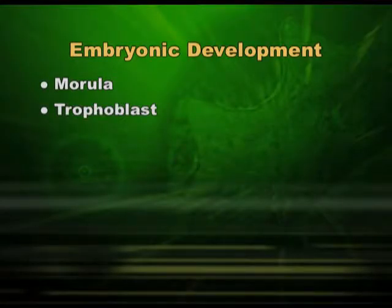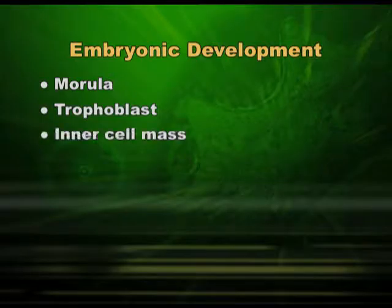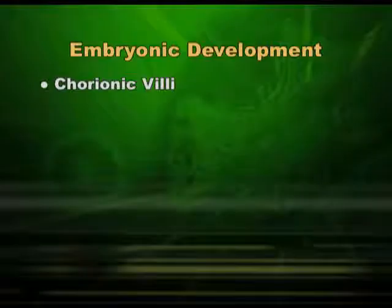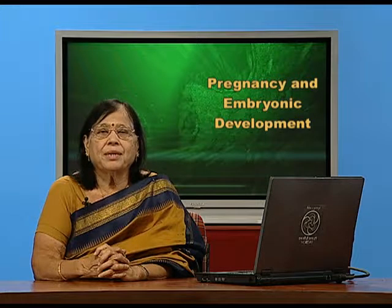The inner cell mass, important for differentiation, is present at the developing stage, and the trophoblast layer gets attached to the endometrium. The inner mass is inside and the outer layer is the trophoblast layer, which is instrumental in attaching to the uterine endometrium at the time of implantation. Once implantation has taken place, all other events follow — formation of placenta, formation of cord, maintenance of blood supply, arteries, veins — everything follows. If implantation had not taken place, the 32-cell stage embryo would just be expelled.